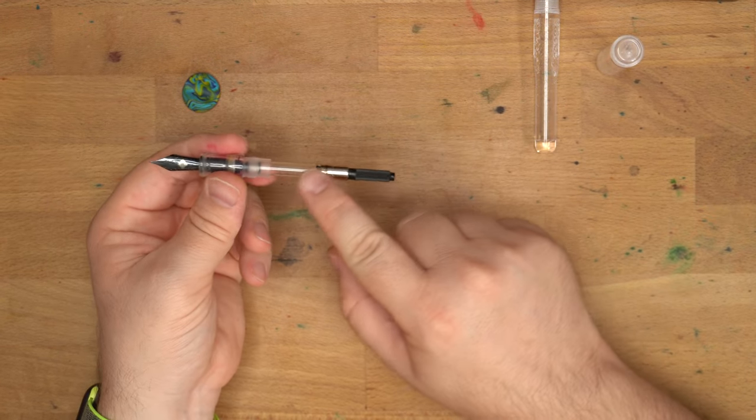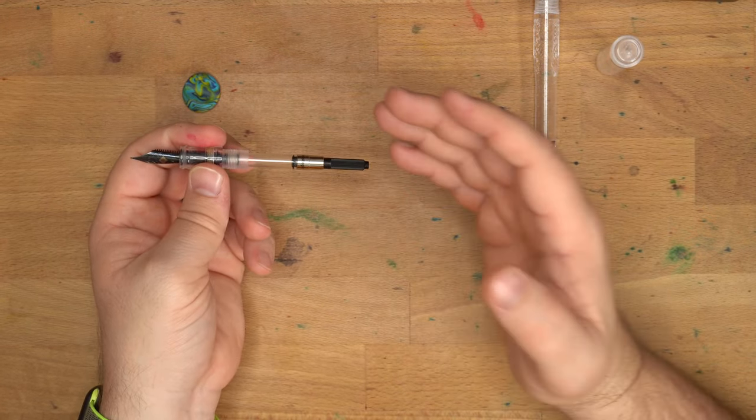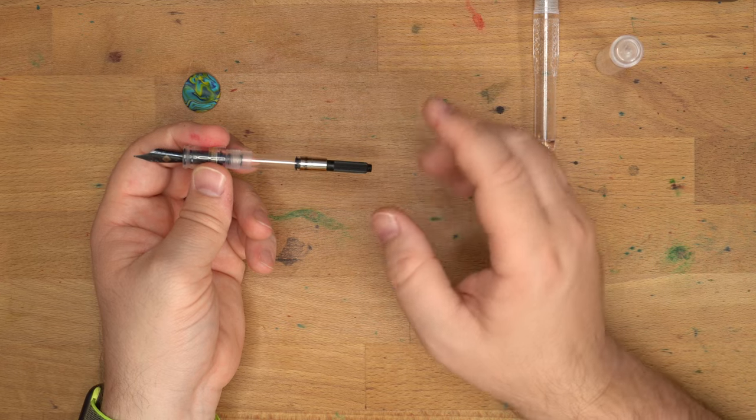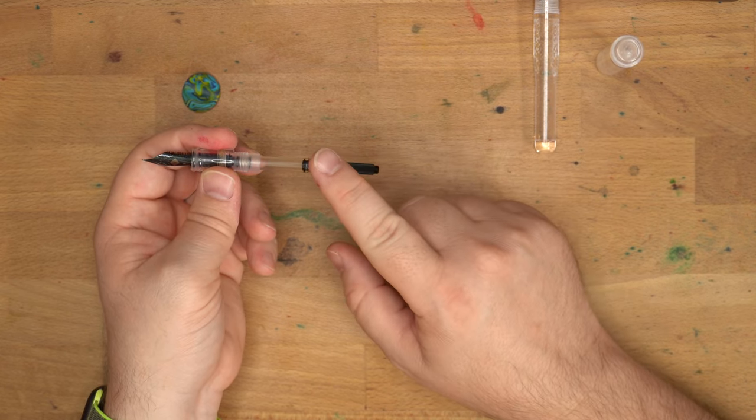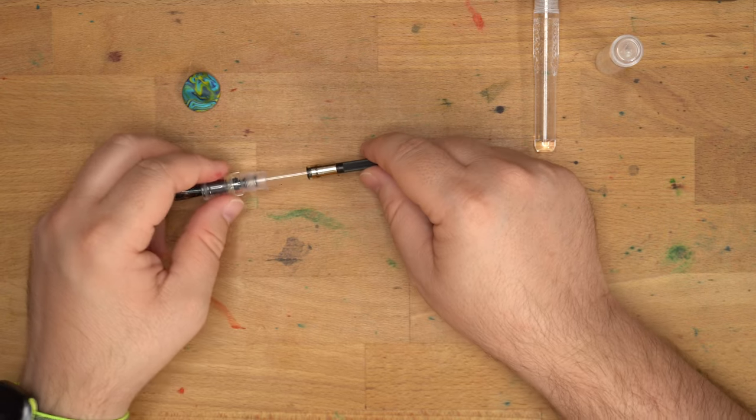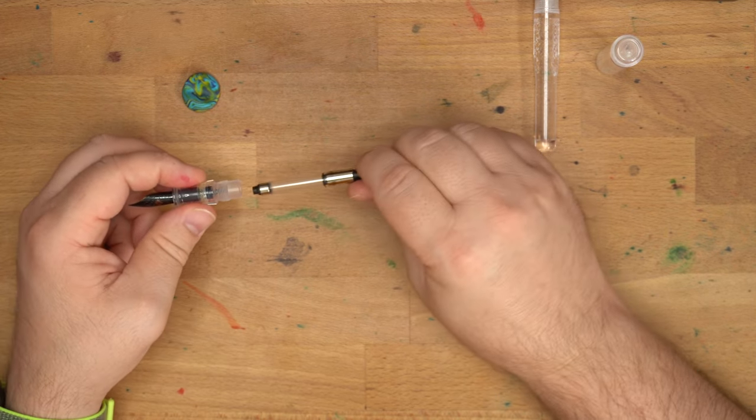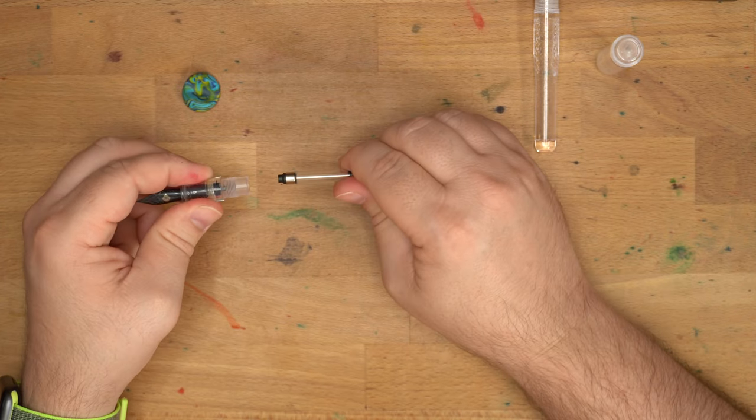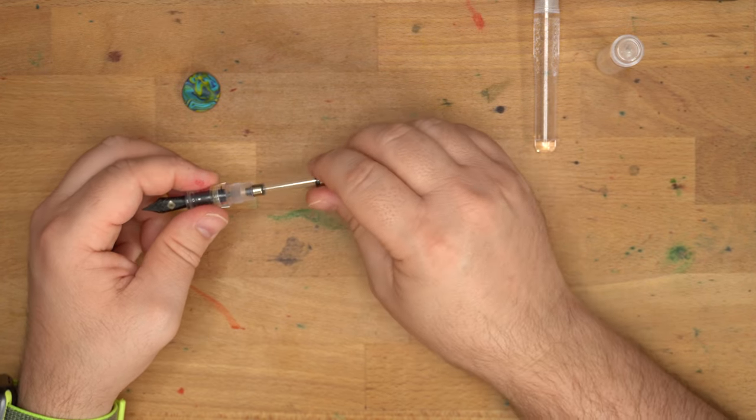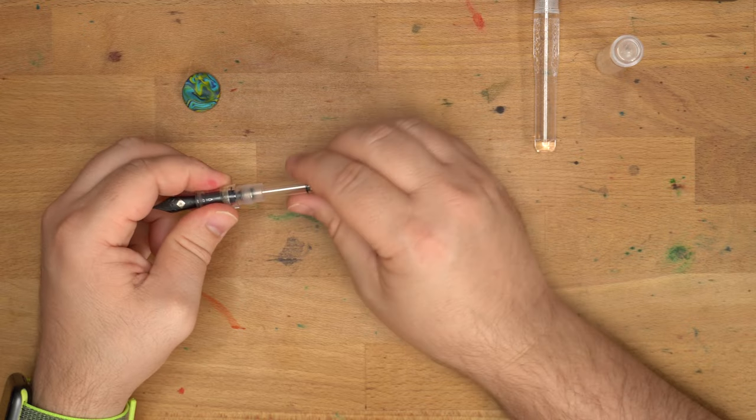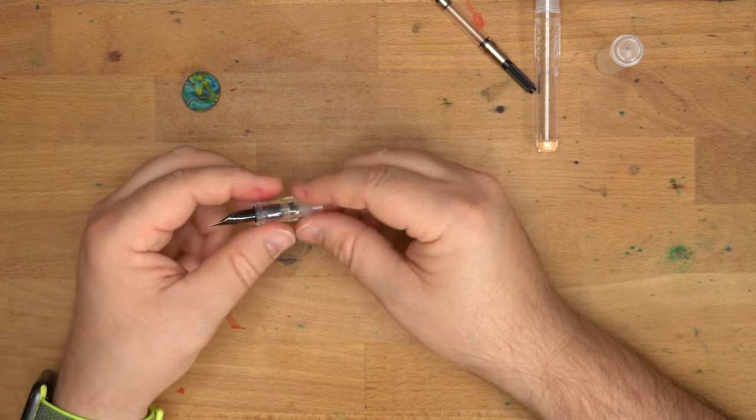What we have here is the converter. Now, I'll have another video on filling pens and those sorts of things, but this is essentially what you use to suck ink out of a bottle of ink and into a pen. Very simple. We'll take this off, it just comes off, just give it a little bit of a tug, and it'll come off. To insert it, you just sort of press it gently in there. Okay, set that aside.